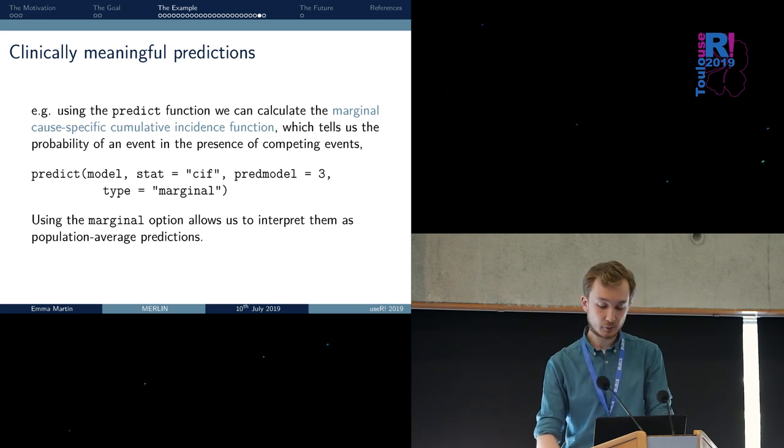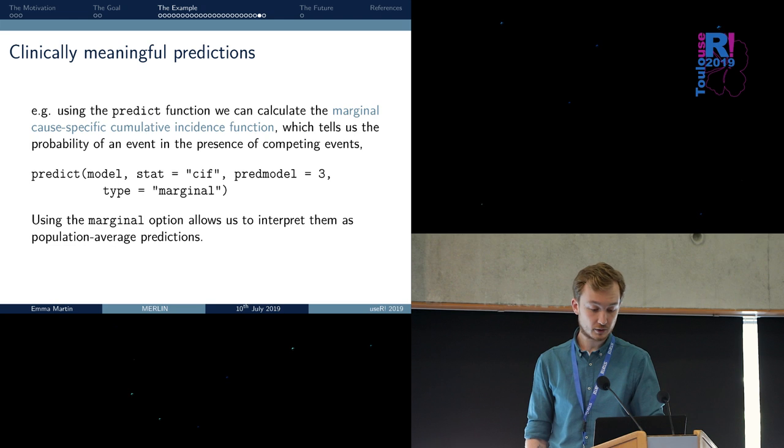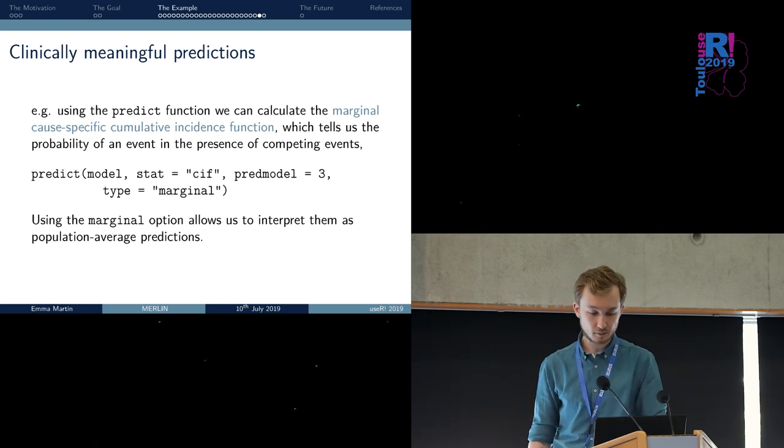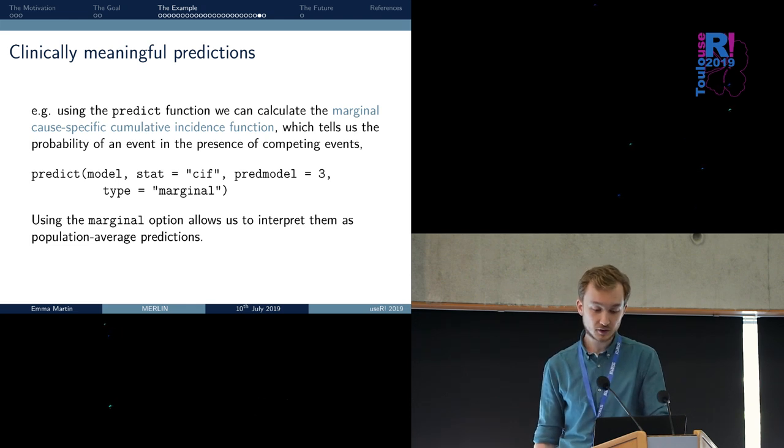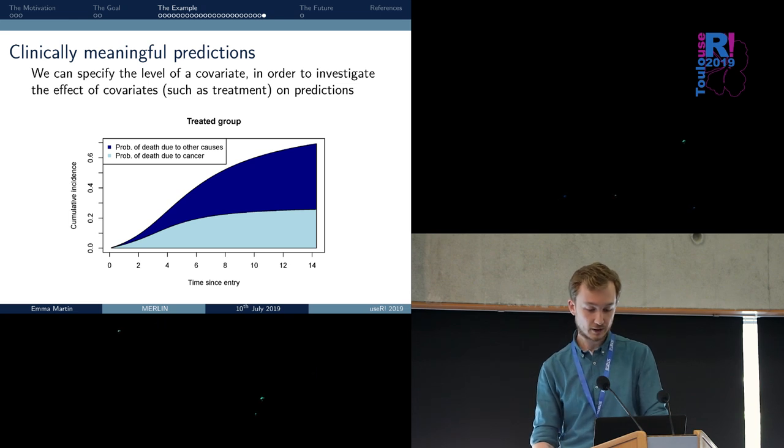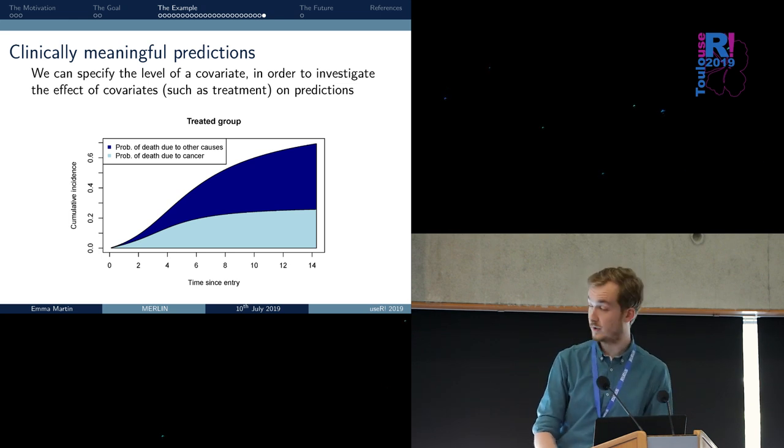What we can get is clinically meaningful predictions. For instance, starting from the model that we fit, the final model that I showed in the previous slide, we can use the predict function. We could predict the marginal cause-specific cumulative incidence function, which will tell us the probability of dying of a given cause in the presence of a competing event. We can obtain these predictions using this simple command. If we add the marginal option, we integrate out the random effects, and we can interpret them as population average predictions. We can obtain a plot like this that shows that, over time, the probability of dying because of cancer, or the probability of dying because of other causes in the treated group.